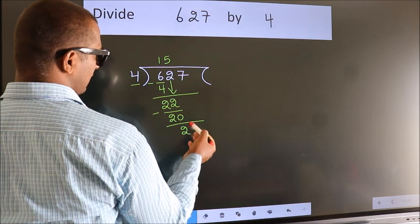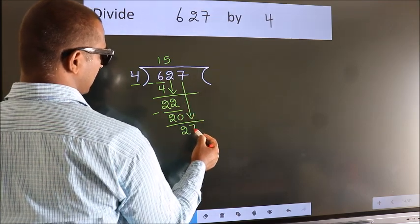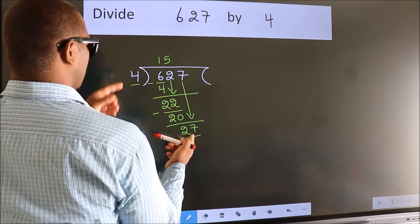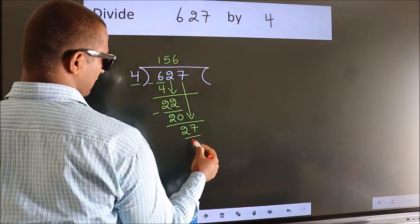After this, bring down the beside number, 7 down, so 27. A number close to 27 in the 4 table is 4, 6, 24.